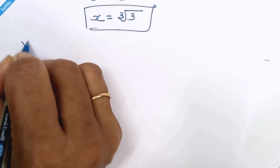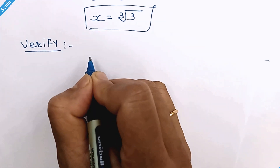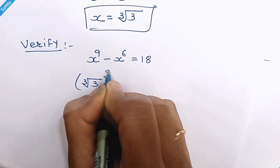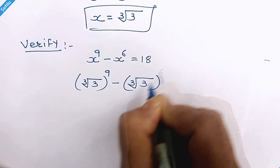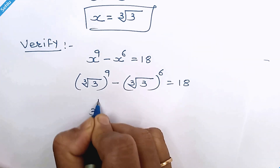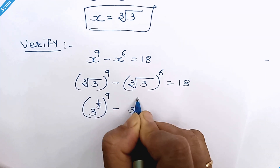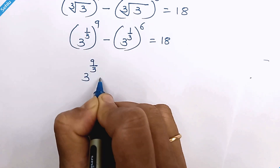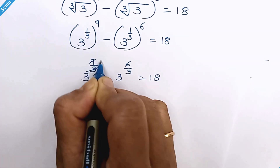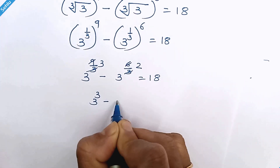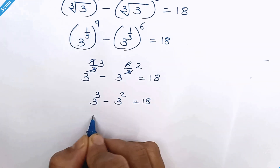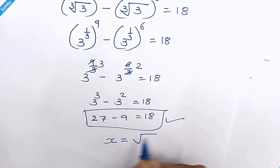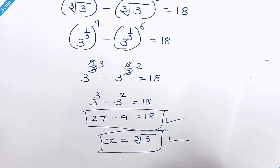Let's verify the answer. Putting x equal to cube root of 3 into the original equation: the exponents simplify to powers of 3, giving 3 cube minus 3 square is equal to 18. 3 cube is 27, minus 9 is equal to 18. So x is equal to cube root of 3 is the correct answer. Thanks for watching and bye bye.